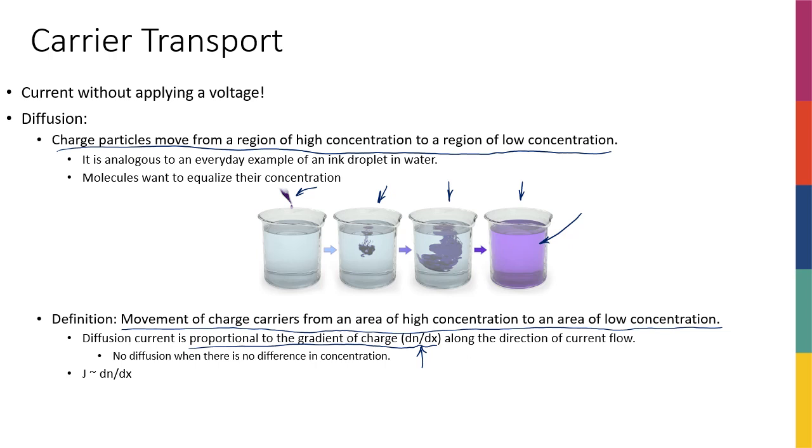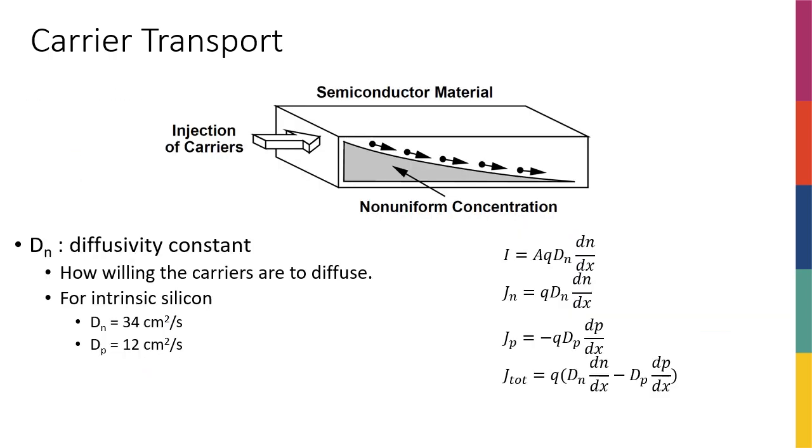So basically no diffusion when there's no difference in concentration in different regions. So I can say that the current density, or current, doesn't matter, we're going to use current density from now on so that we make our analysis independent of the physical size of the crystal. So the current density is going to be proportionate to dn over dx, or basically the gradient of charges.